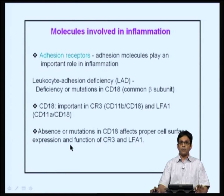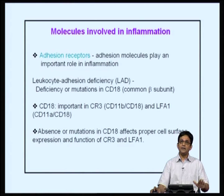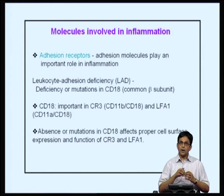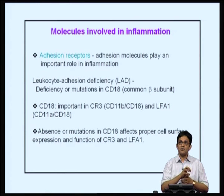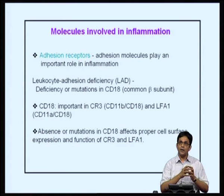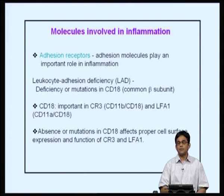CR3, shown here as CD11b and CD18, is present on neutrophils, NK cells and macrophages, and is important for phagocytosis and destruction of foreign cells. We will see the importance of the CD18 subunit subsequently. During inflammation, adhesion receptors increase — both receptors as well as ligands — and this adhesion is important because neutrophils and macrophages have to leave the blood circulatory system and travel into tissues where damage has taken place. Adhesion receptors and ligands play a very important role in this process.